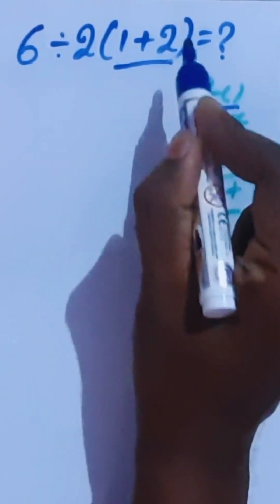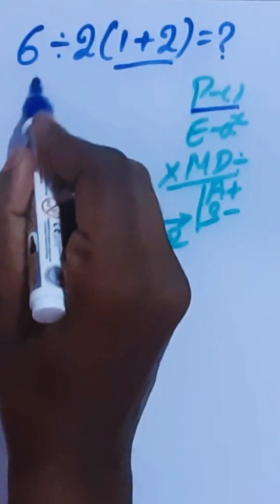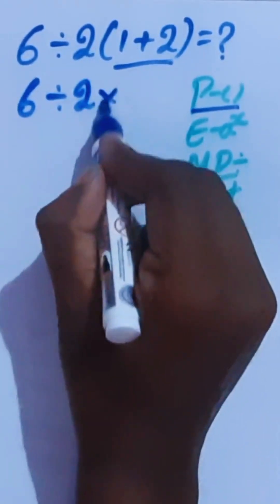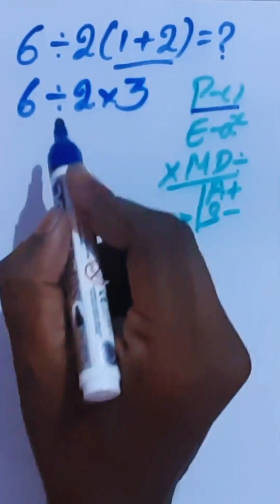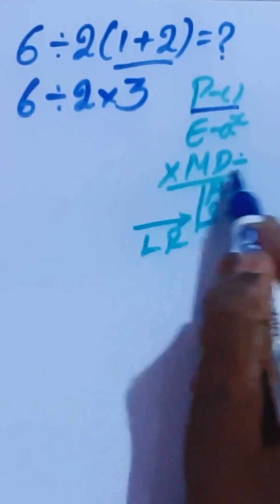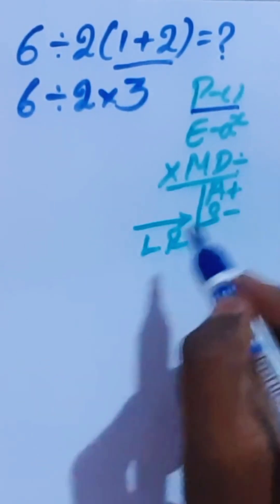So, 6 divided by 2 times (1+2). First, 1 plus 2 is 3, giving us 6 divided by 2 times 3. Now we have division and multiplication, which both have equal priority, so we follow the left-to-right rule.